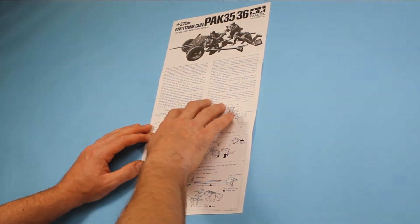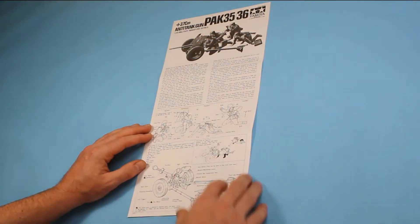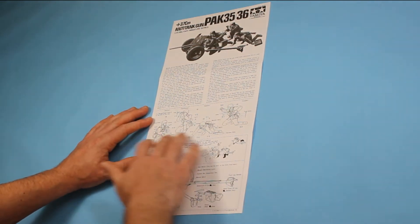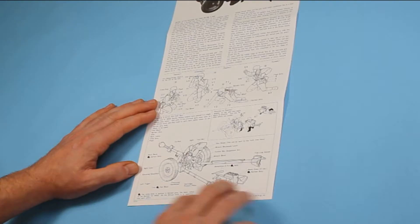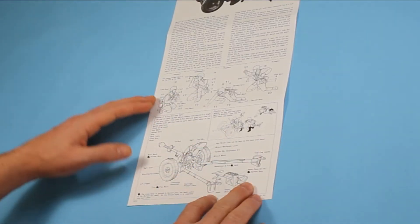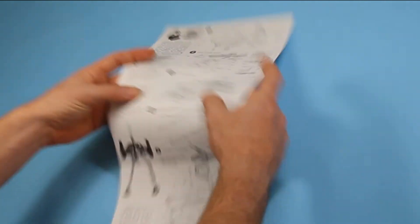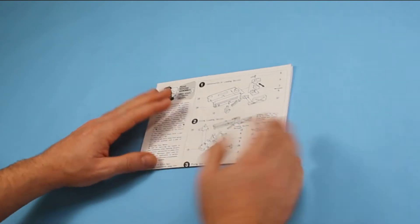You've got a write-up here explaining about the use of the Pak 35-36, color callouts here for the figures that you get included. A diagram here showing the layout of how you might want to pose the gun once it's finished. And then over the other side it's the layout form, so it's split into five or six parts.